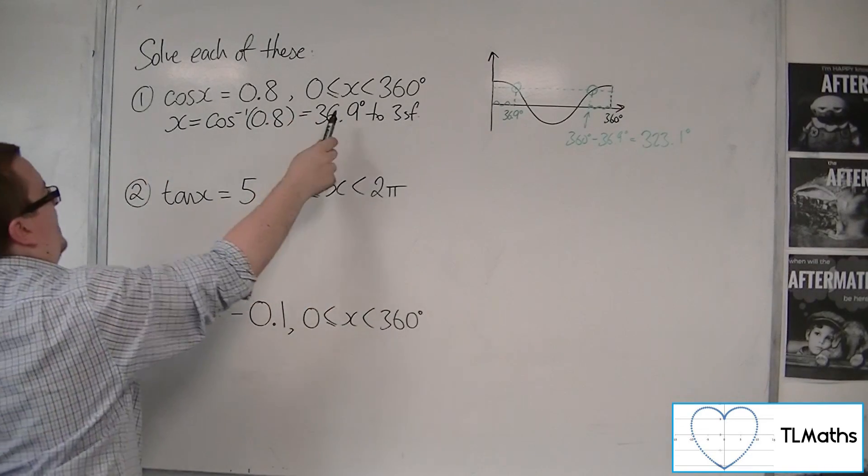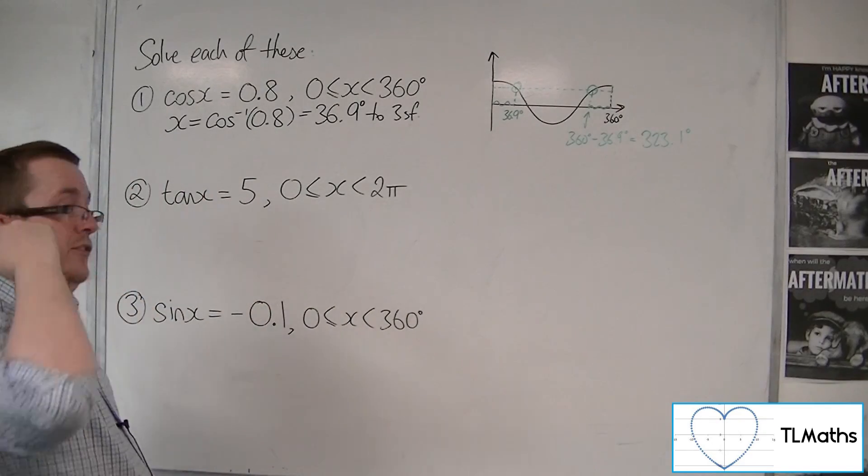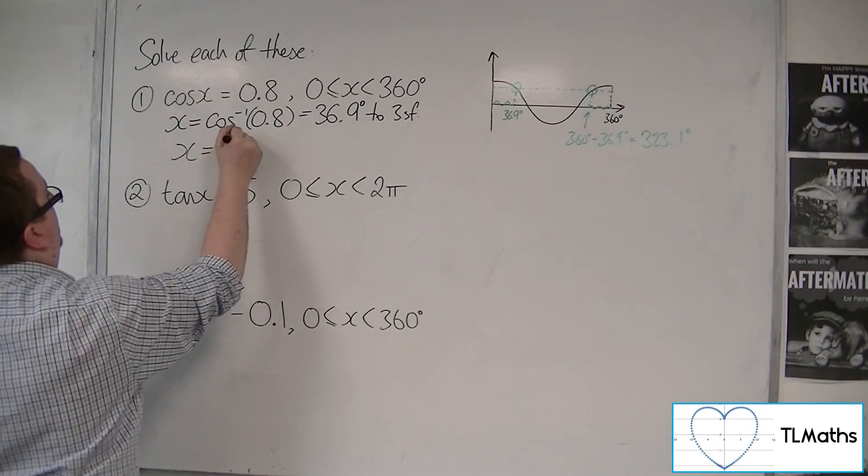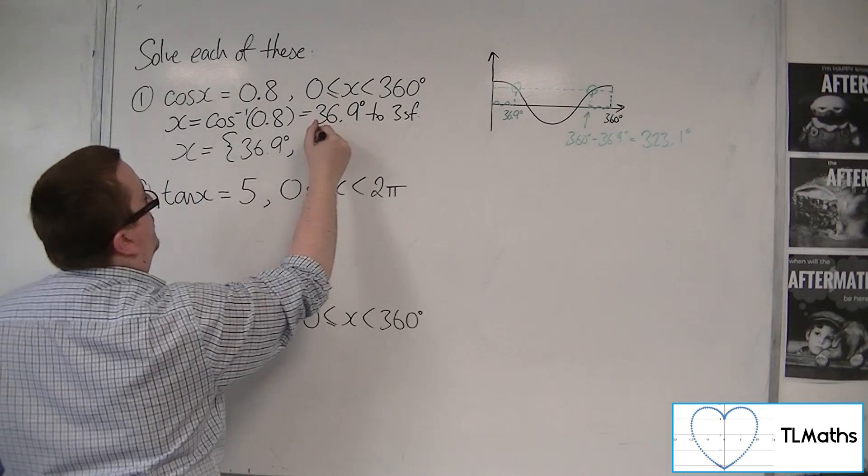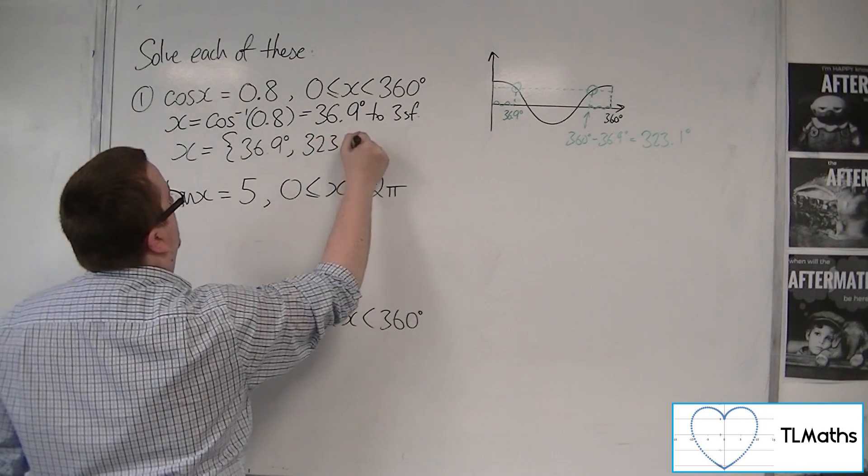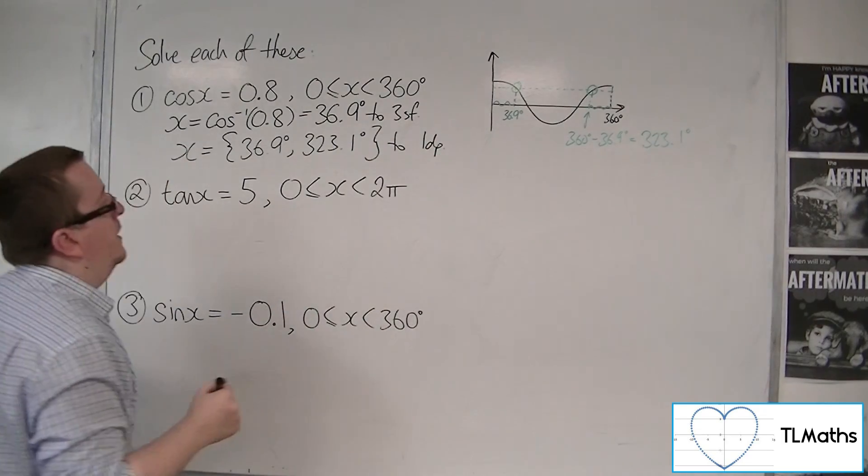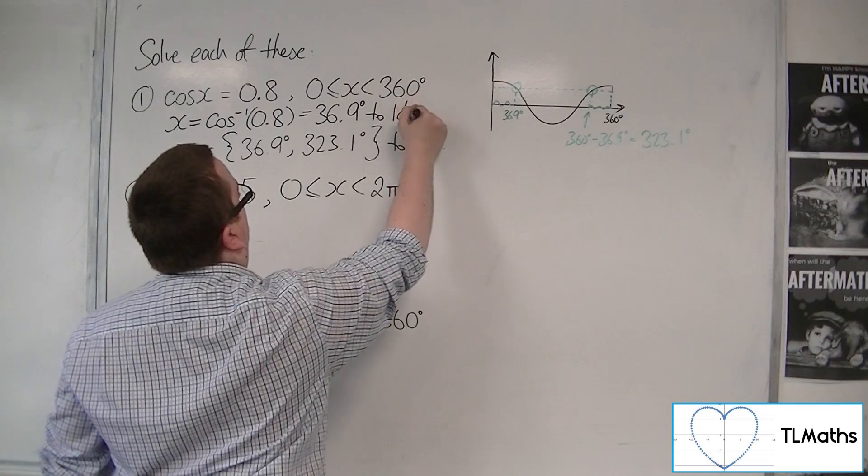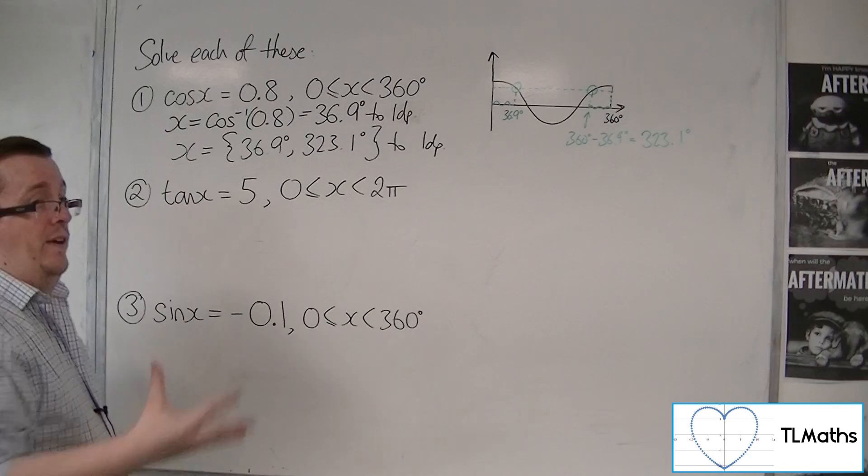I've put that to 3 sig fig, I've put that to one decimal place. I usually keep degrees to one decimal place. So my answers are 36.9 degrees and 323.1 degrees to one decimal place. That's the first one.